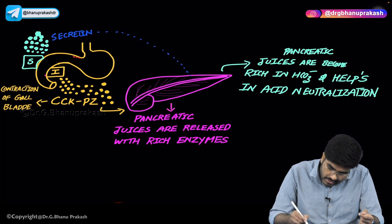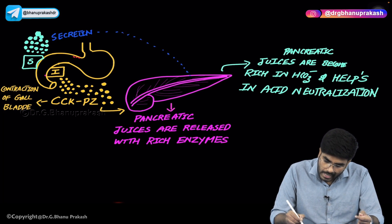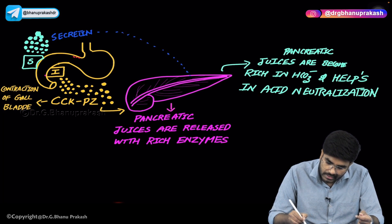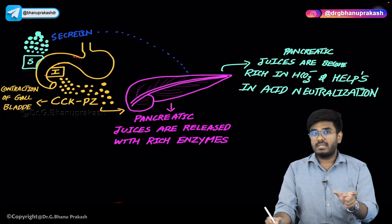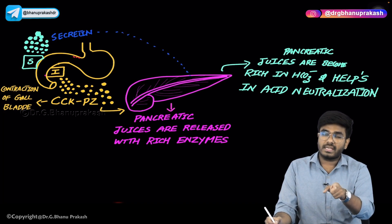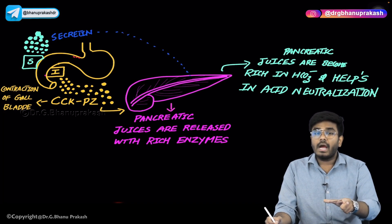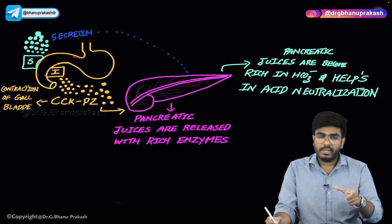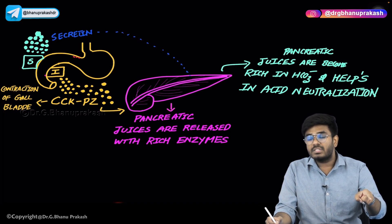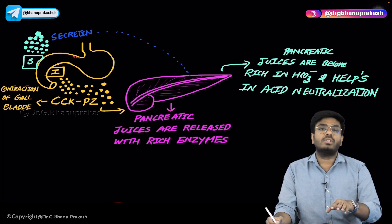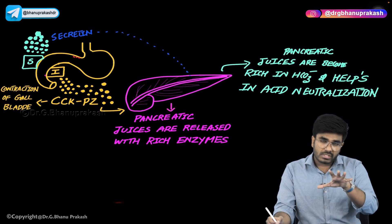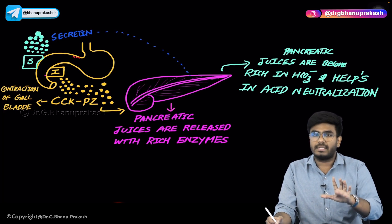Pancreatic juices are alkaline — pH 8.3 — and that pH comes about because secretin from the S cells acts on the pancreas, causing the pancreas to put more bicarbonates into the pancreatic juices. So pancreatic juices are more alkaline under the influence of secretin.